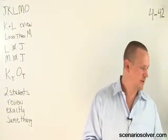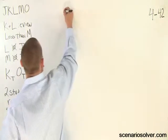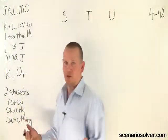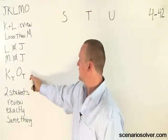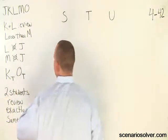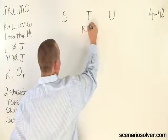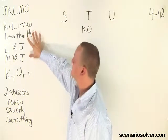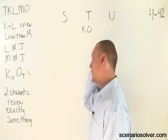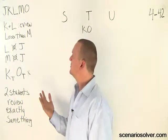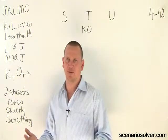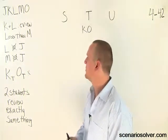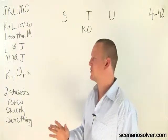We're looking at S, T, and U. We want to use the hierarchy of rules to solve the scenarios, and we're given a first order rule right here that tells us K and O have to occur in T. So this rule is completed. K and L review less than M. M could do three or two, because K and L at least have to do one per the game setup, but M can't review the same as J. So that limits M to just two.